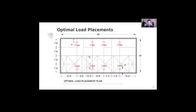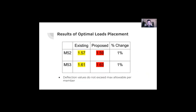Here are the optimal load placements, with eight placements of two kips placed three feet from the masonry wall at both the top side and the bottom side of the rigging structure.